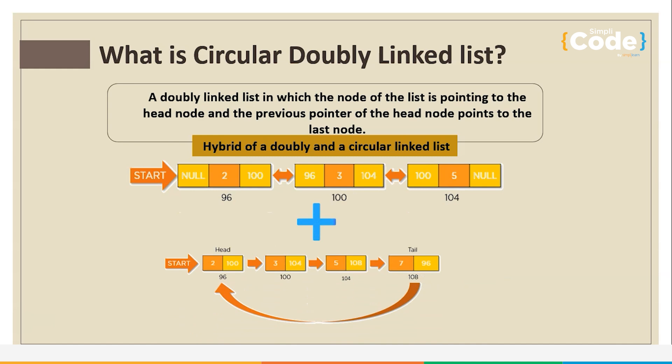The last node's next pointer points back to the first node. Similarly, the first node's previous pointer points to the last node, completing the circle in a circular doubly linked list. So it is basically a hybrid version of doubly as well as a circular linked list.